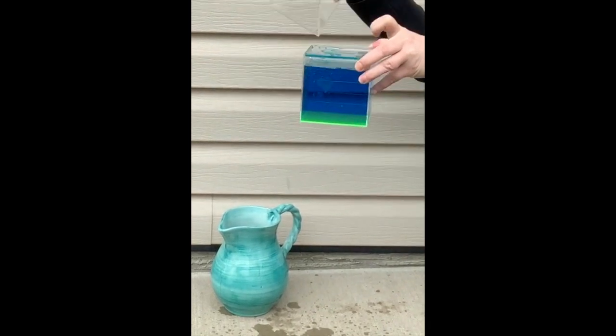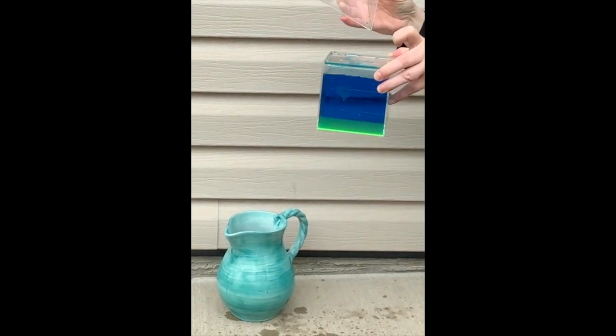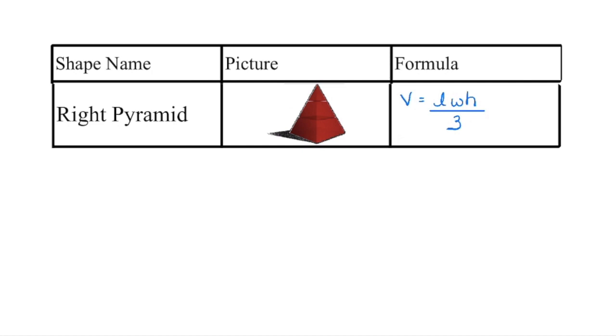Now the base of my cube was a little bit larger than the base of the pyramid and I also spilled some water but we can see that three of those pyramids will fill one of those cubes. So if we take the formula to find the volume of a right prism and then take a third of that, it will give us the volume for a right pyramid.